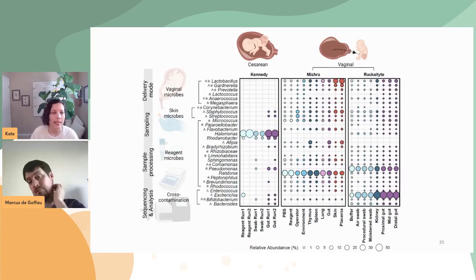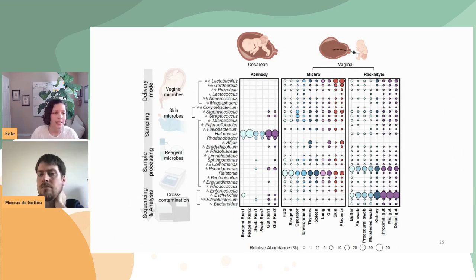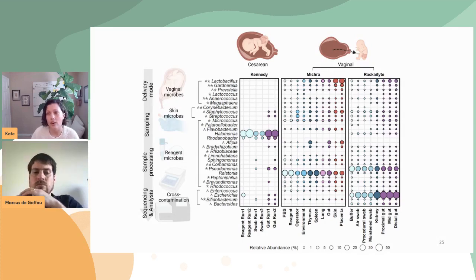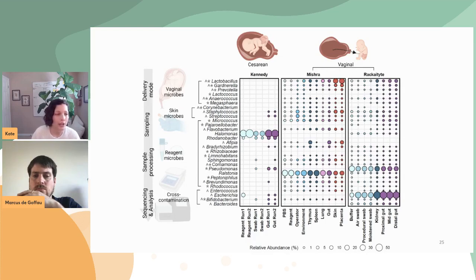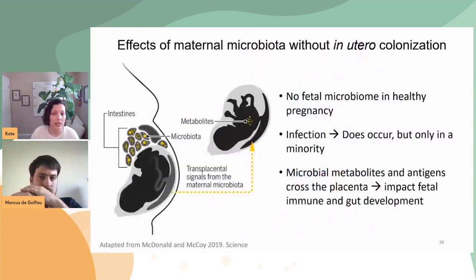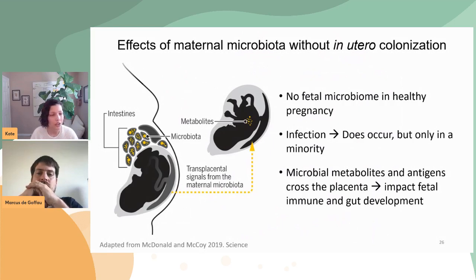Across all comparisons, the fetal meconium samples were indistinguishable from negative controls. In our perspective paper, I did a re-analysis looking at the relative abundance of the most important genera across three studies: ours with breech cesarean deliveries, Mishra et al., and Rackaityte et al., which had vaginal deliveries. From our study with cesarean deliveries, there are far fewer contaminants overall — and particularly we're missing those vaginal microbes at the top of the graph.